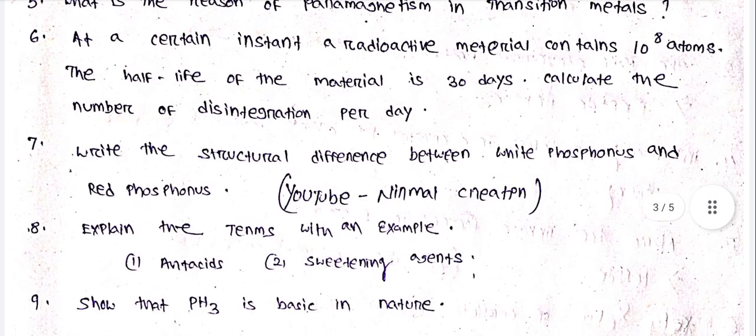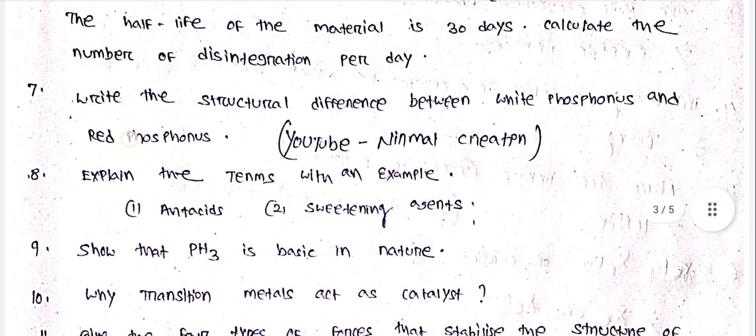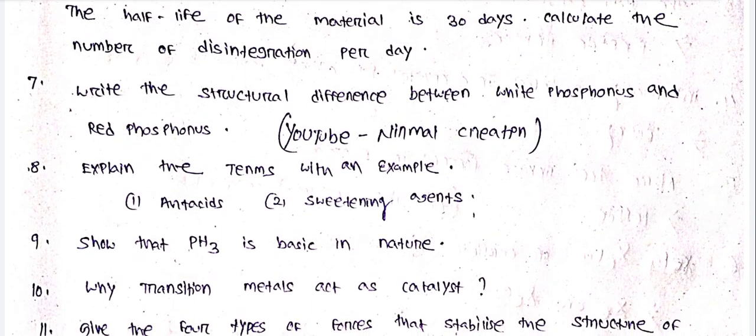At a certain instant, a radioactive material contains 10 to the power 8 atoms. The half life of the material is 30 days. Calculate the number of disintegration per day. Write the structural difference between white phosphorus and red phosphorus.